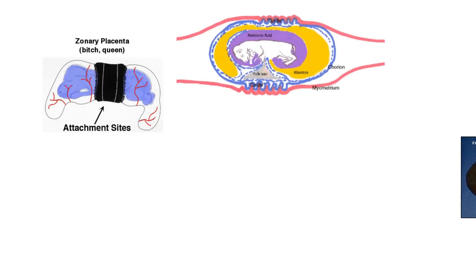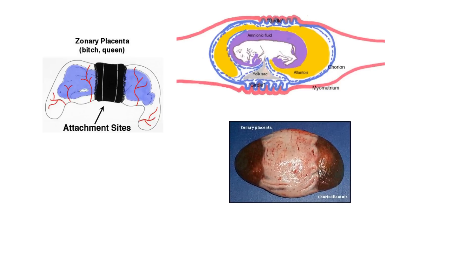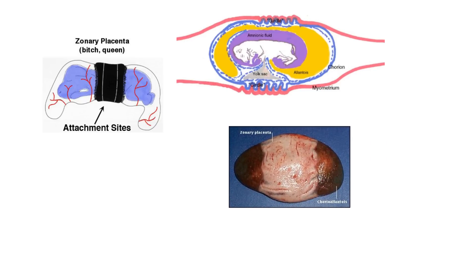The umbilical cord, if you followed it out of the fetus, would be attached to all the areas in that zone. And finally, this picture is the actual photograph of a zonary placenta and how it attaches to the uterus — there's no uterus shown here, but there is a fetus visible.